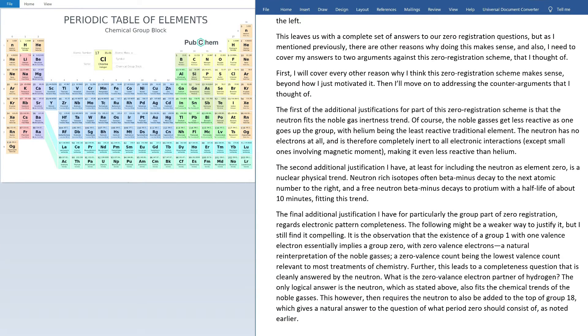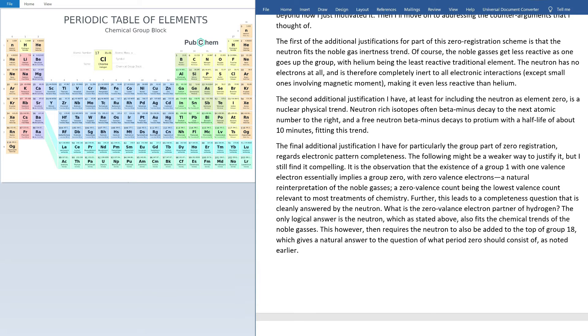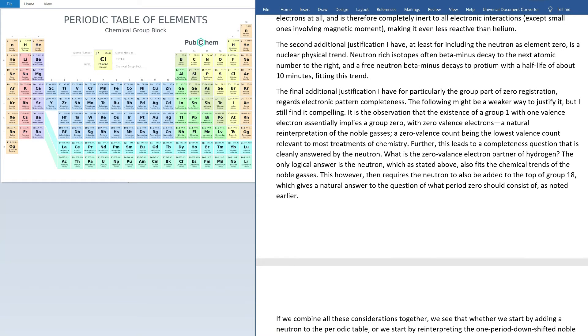Of course, the noble gases get less reactive as one goes up the group, with helium being the least reactive traditional element. The neutron has no electrons at all, and is therefore completely inert to all electronic interactions, except for small ones involving magnetic moment, making it even less reactive than helium. The second additional justification I have, at least for including the neutron as element zero, is a nuclear physical trend. Neutron-rich isotopes often beta-minus decay to the next atomic number to the right, and a free neutron beta-minus decays to protium with a half-life of about 10 minutes, fitting this trend. The final additional justification I have for particularly the group part of zero registration regards electronic pattern completeness. The following might be a weaker way to justify it, but I still find it compelling. It's simply the observation that the existence of a group one with one valence electron essentially implies a group zero with zero valence electrons, a natural reinterpretation of the noble gases, a zero valence count being the lowest valence count relevant to most treatments of chemistry.